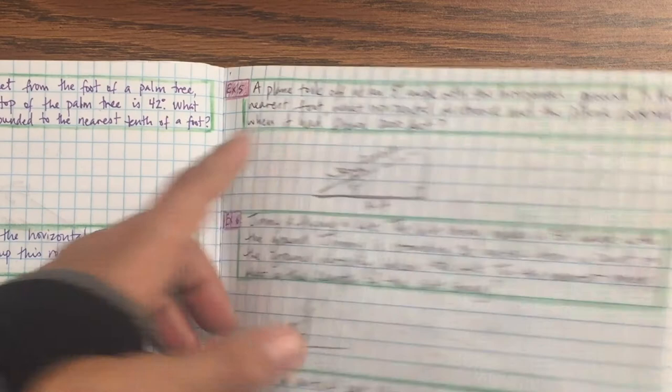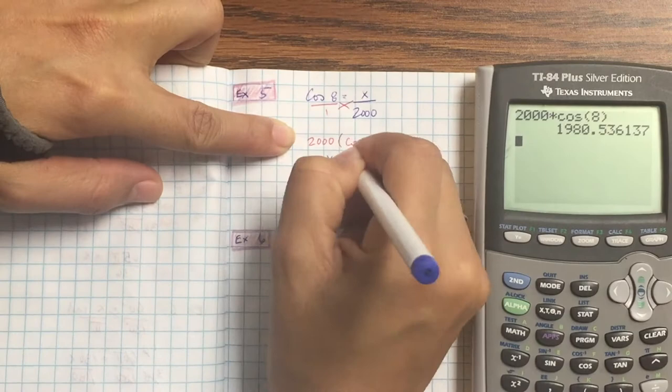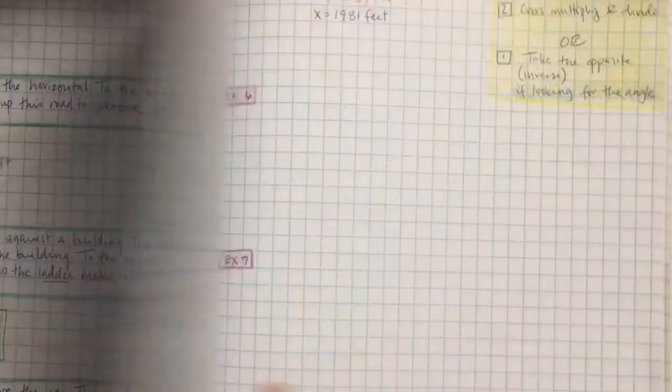So no decimals. That 5 is going to change that 0 to a 1 because 5 and above changes it up 1. Anything below keeps it the same.